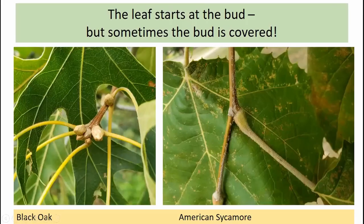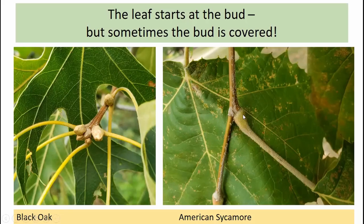When looking at leaf arrangement, we need to recognize that the leaf starts where there's a bud. We're looking for a bud that indicates the beginning of that leaf. On the left, black oak has large prominent buds showing where the leaf stem starts. However, in some cases the bud is actually covered by the leaf, as in American sycamore where the leaf stem completely covers the bud — differences in texture, color, and appearance help us distinguish twig from leaf.